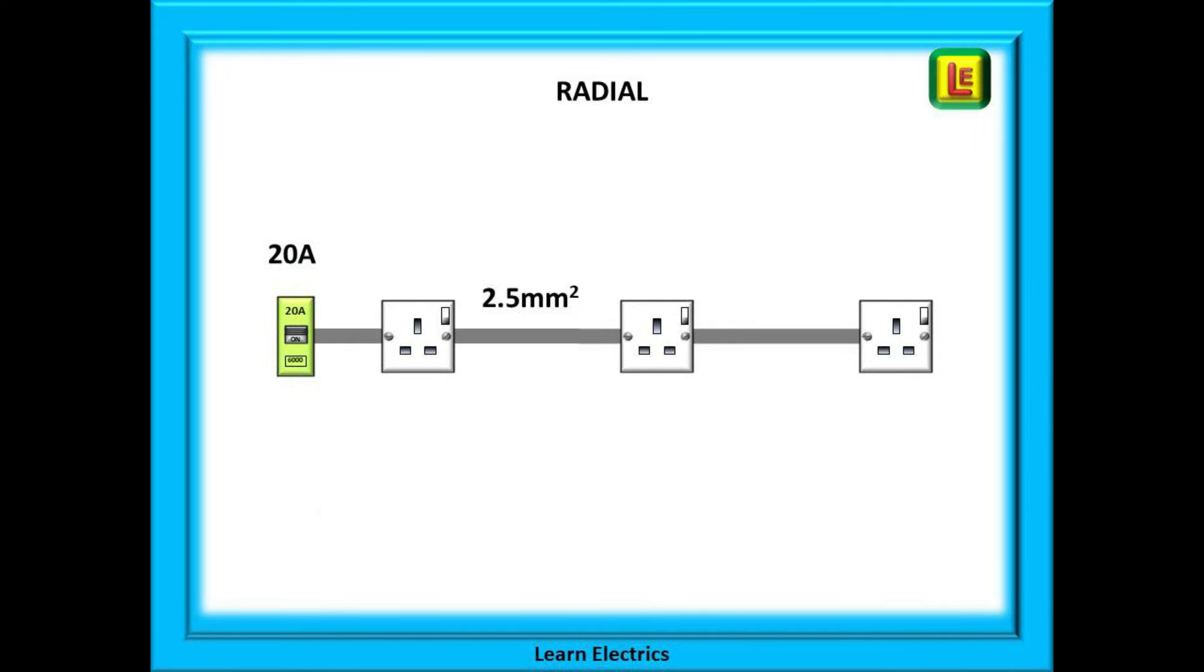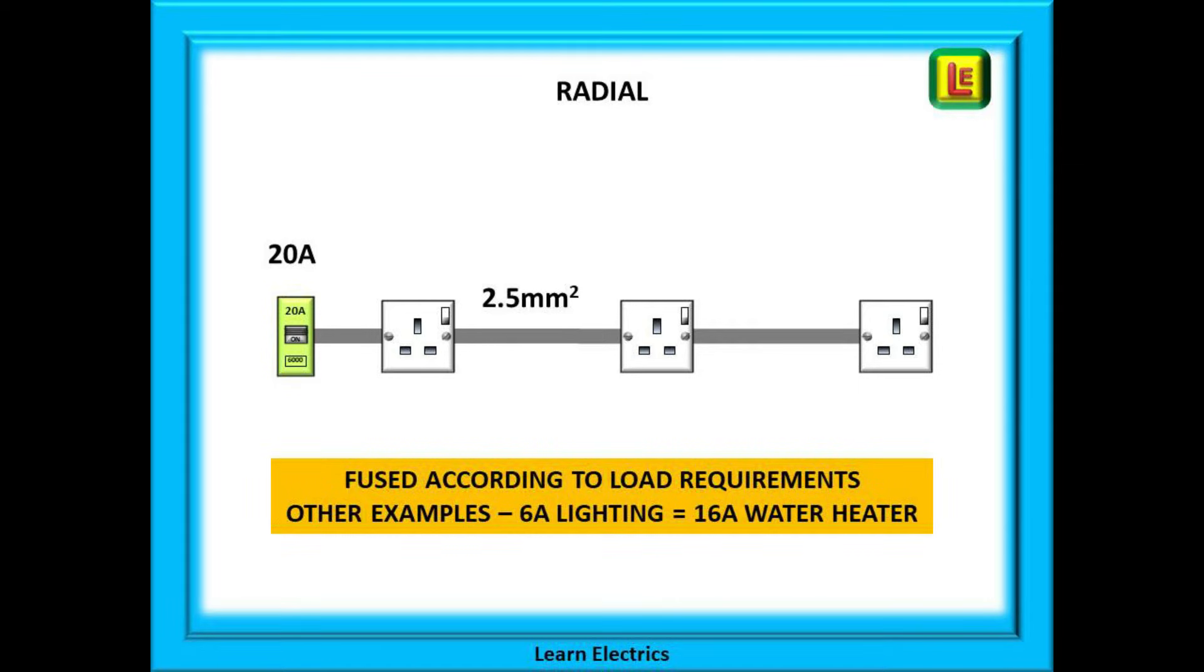Here we are showing a radial socket circuit. In this example the sockets are being protected by a 20 amp circuit breaker and wired in 2.5 millimeter cable and these would be typical sizes. The actual fuse or breaker size is selected for the load or equipment that is using that circuit.